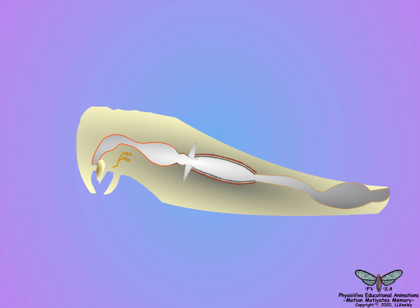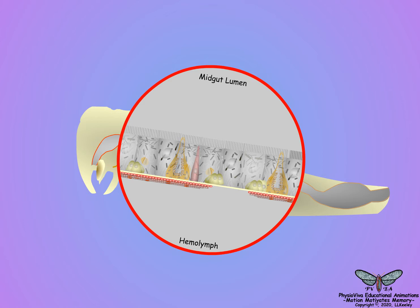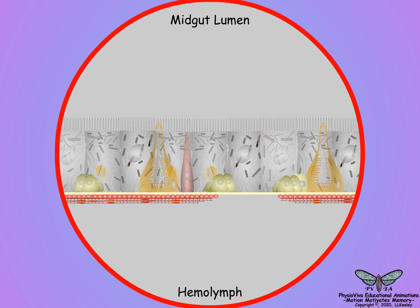Here is a magnification of the ventriculus wall to show its cellular organization. Midgut muscle layers are reversed from those of the foregut, with circular muscles innermost and longitudinal muscles outermost. The muscles do not uniformly cover the entire midgut surface, and many of the midgut cells are covered on the hemolymph side by only the basal lamina. The midgut consists of four cell types: columnar cells, regenerative cells, goblet cells, and endocrine cells.